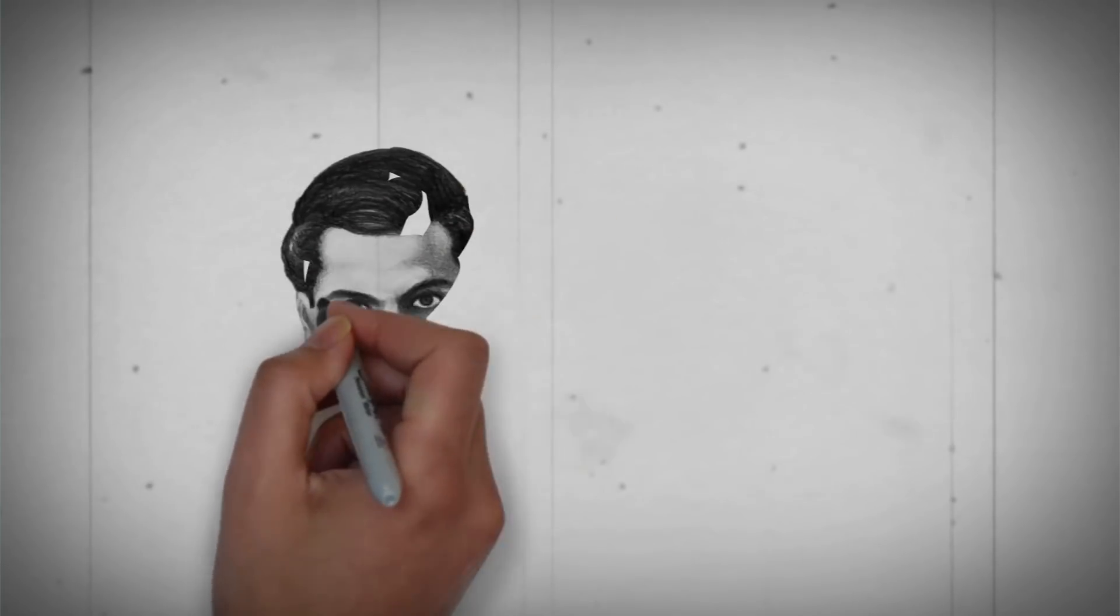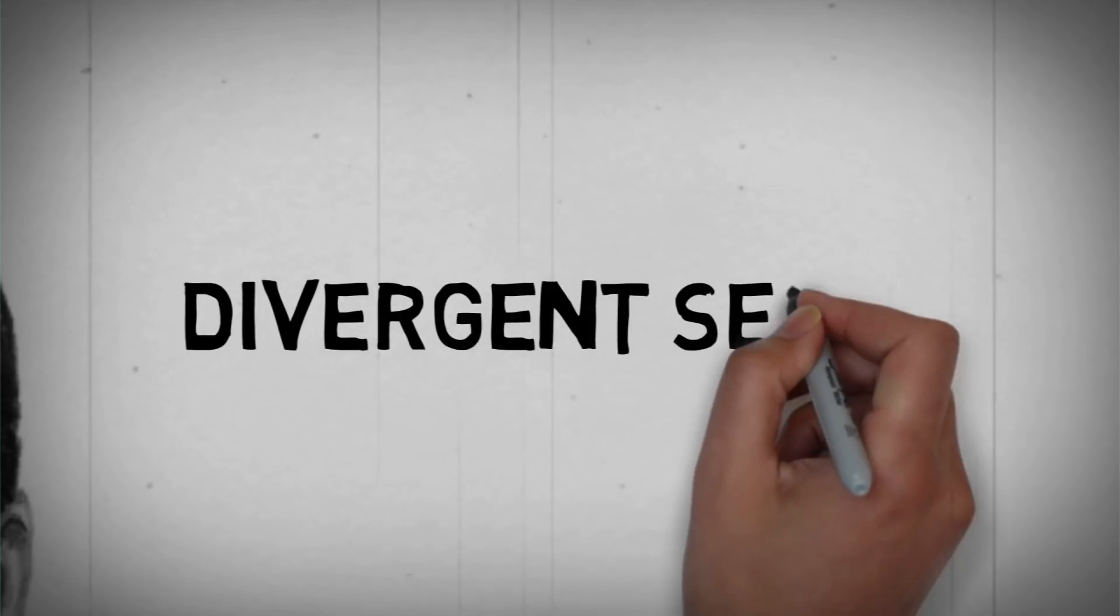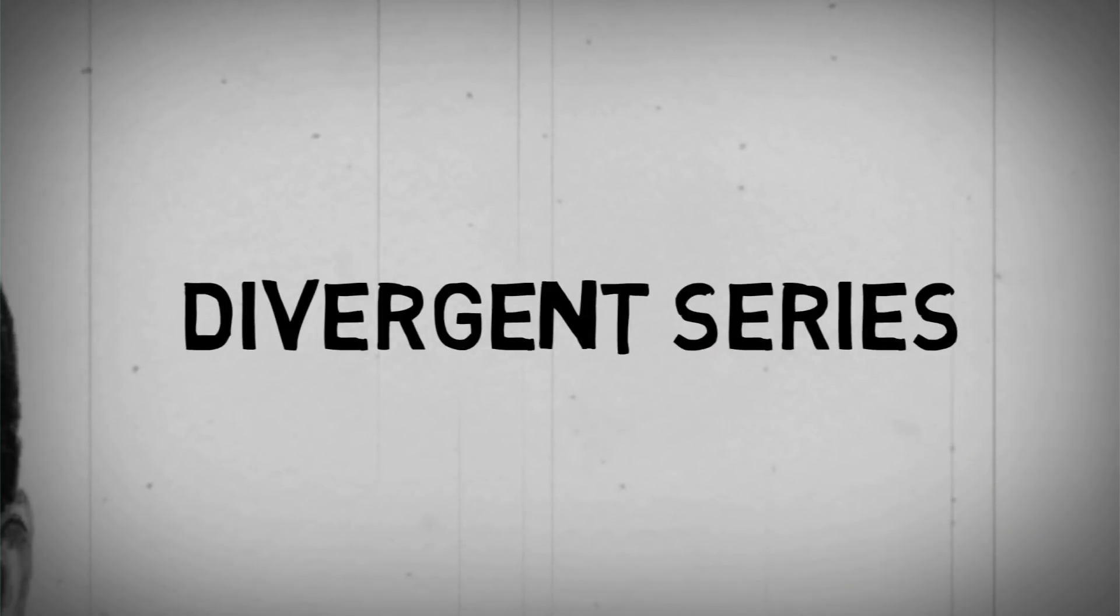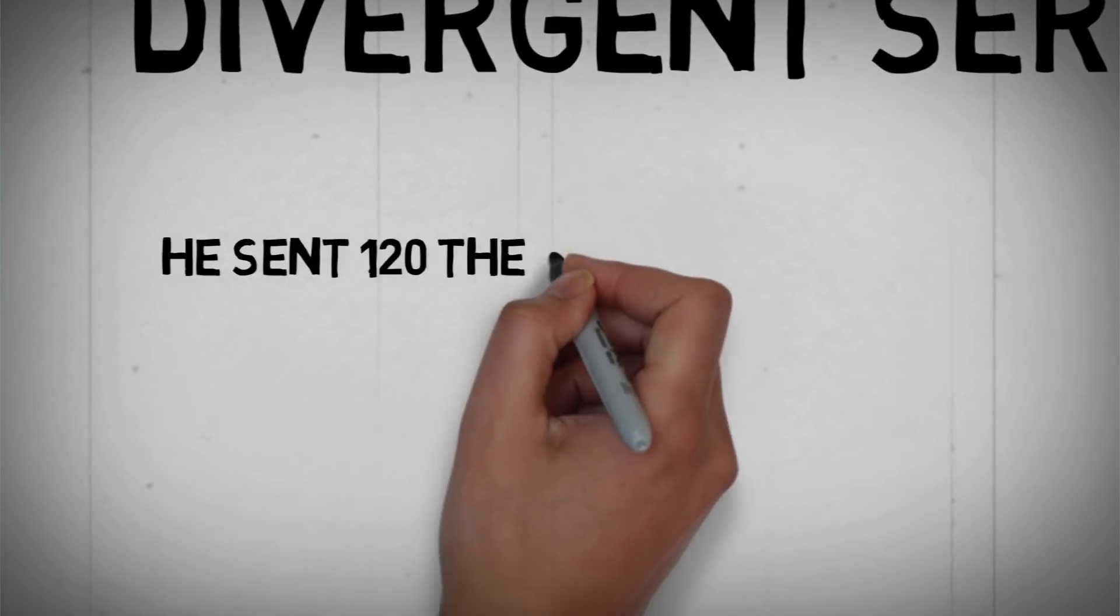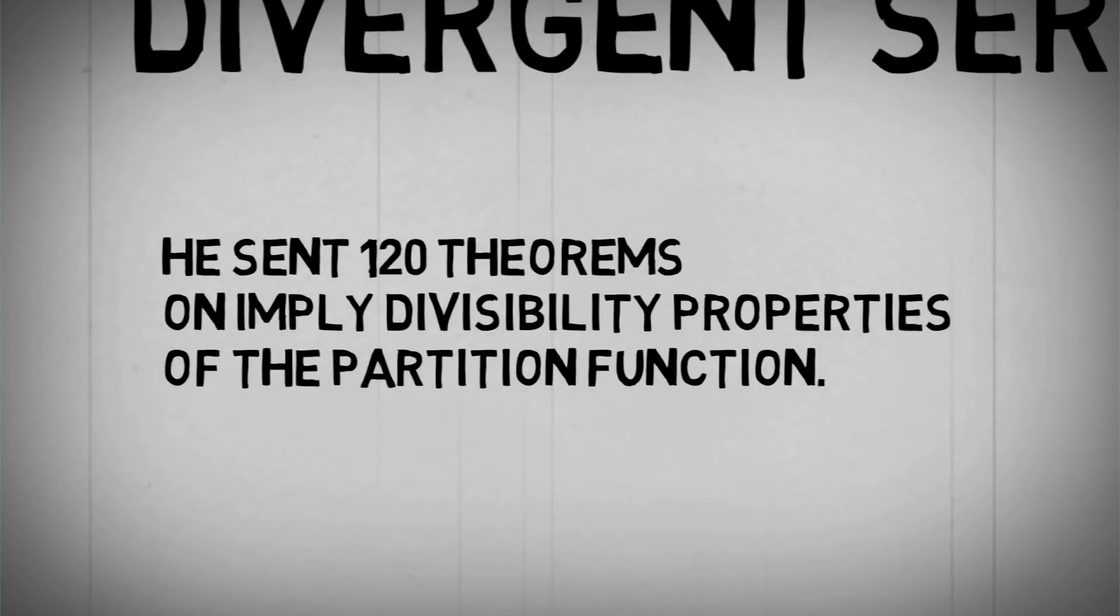Ramanujan worked on divergent series. He sent 120 theorems on implied divisibility properties of the partition function. He gave a meaning to Eulerian second integrals for all values of n: negative, positive and fractional.